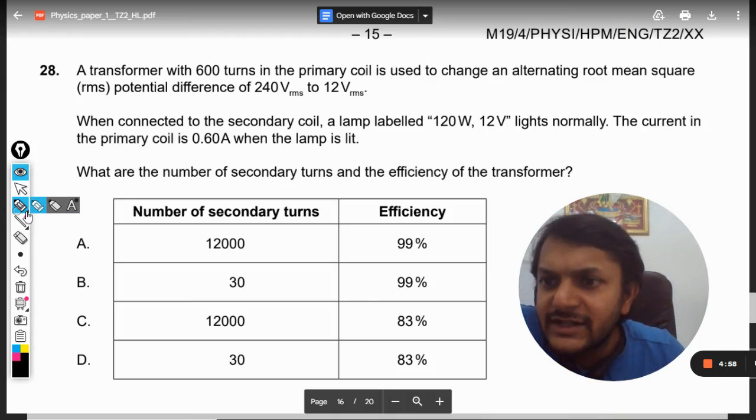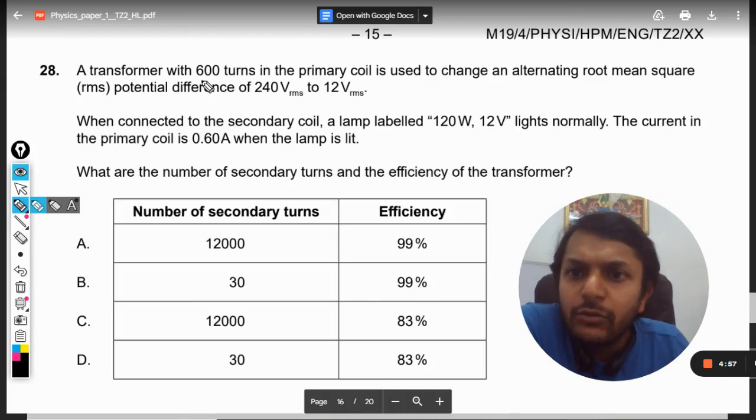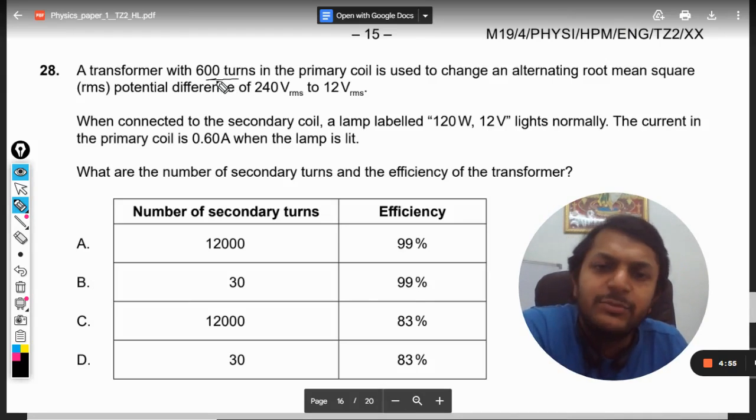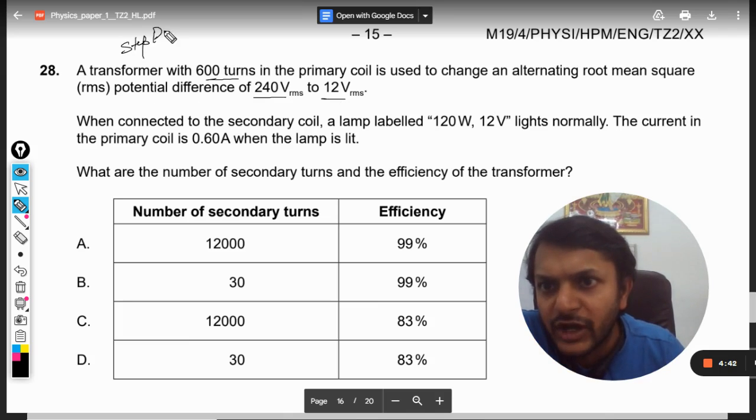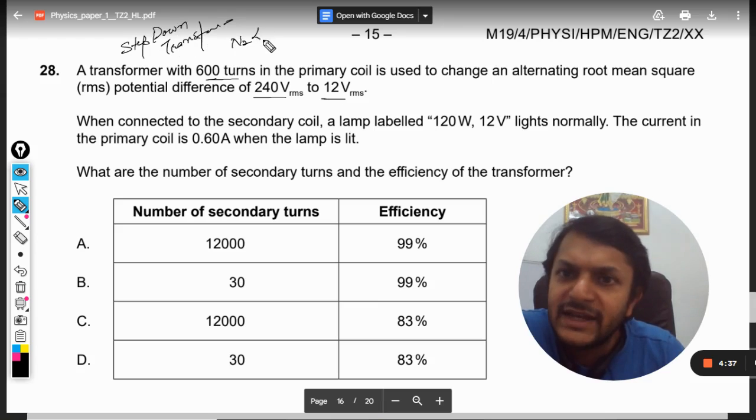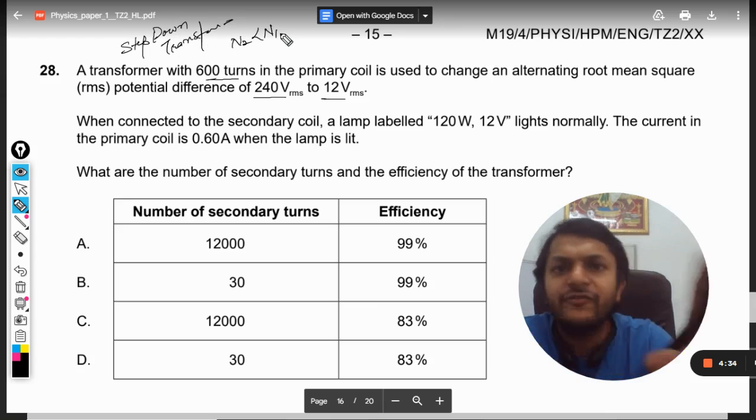Okay dear students, let us read the question. A transformer with 600 turns in the primary coil is used to change an alternating root mean square potential difference of 240 volts into 12 volts. So first of all, it is a step down transformer.